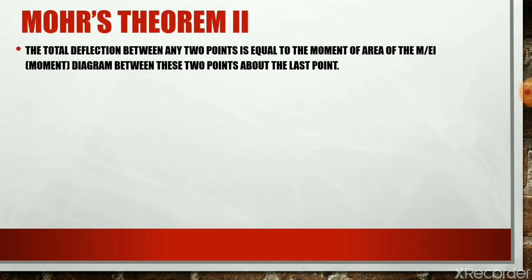In a similar manner, Mohr's Theorem 2 explains the deflection between two points. It states that the deflection between any two points equals the moment of area of the M/EI diagram between those two points about the reference point. In Mohr's Theorem 1 we found only the area of the M/EI diagram, but in Mohr's Theorem 2 we must find both the area and the centroidal distance of the M/EI diagram. The area multiplied by the centroidal distance gives the moment of area, which equals the deflection.